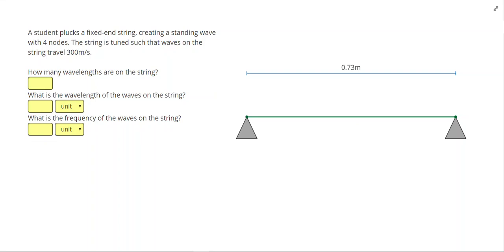A student plucks a fixed-end string, creating a standing wave with four nodes. The string is tuned such that the waves on this string travel 300 meters per second. Let's start by drawing our wave. So it says we have four nodes, but we already have two nodes at the end of the string since the string can't vibrate. I'm going to add a couple more and try to space those equally, and then draw the wave.